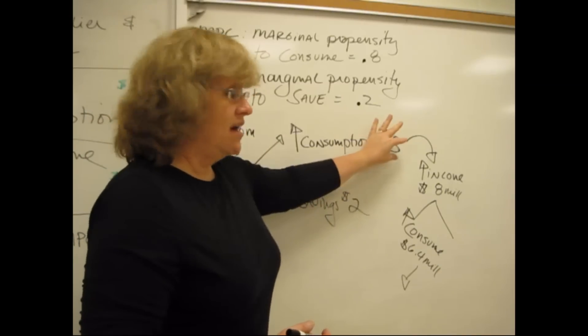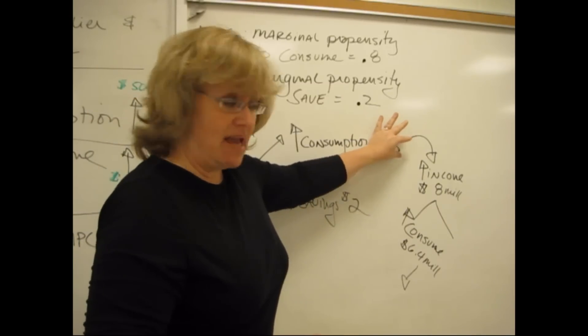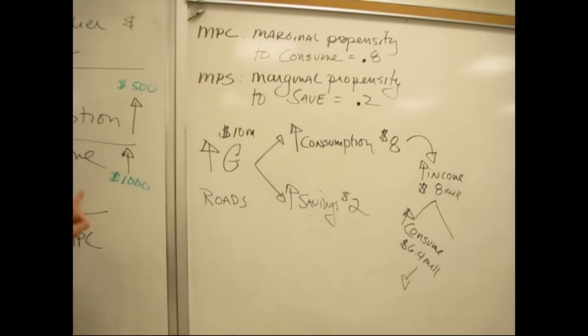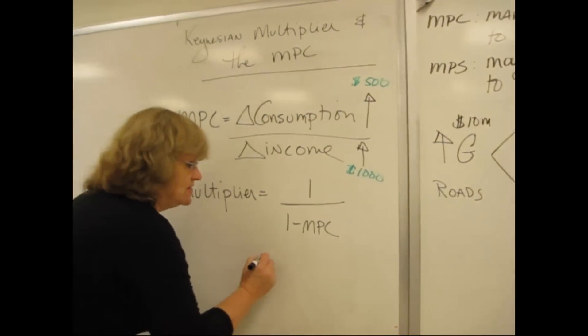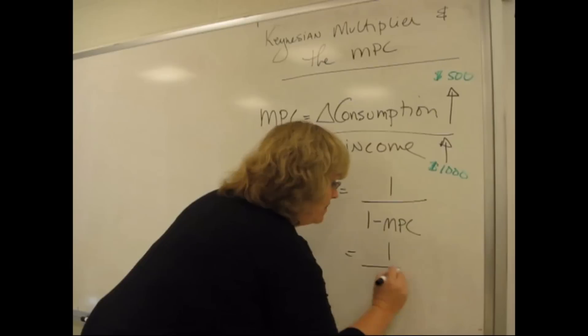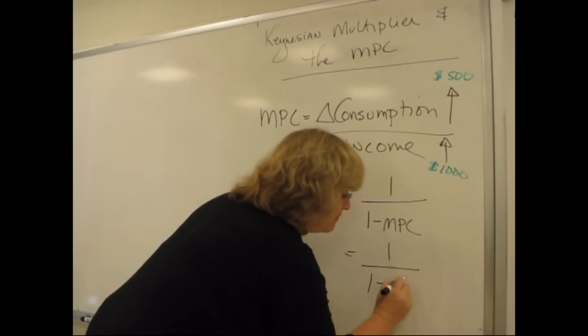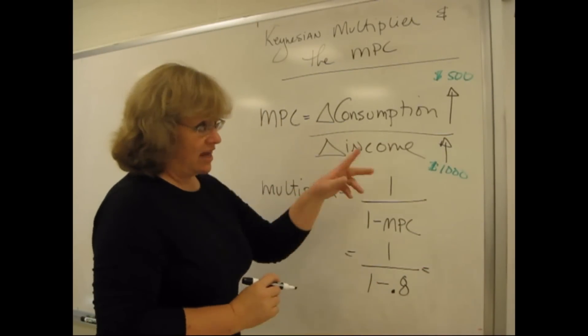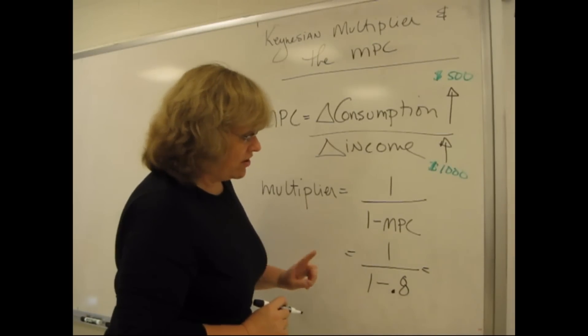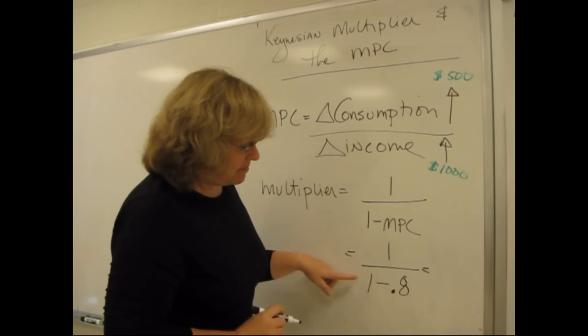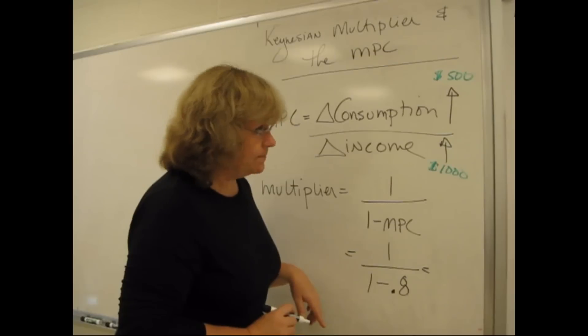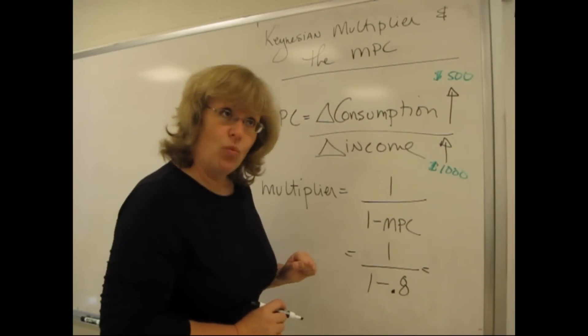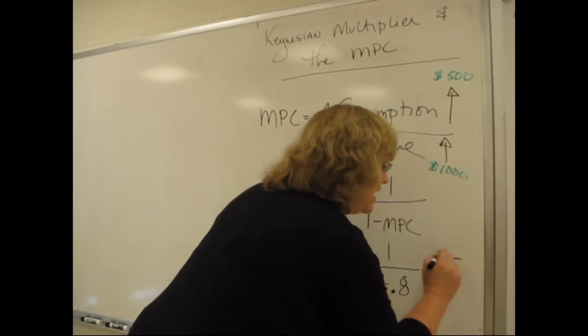The original 10 million dollars, the next stage of spending in the 8 million, the stage after that in the 6.4 million. The multiplier tells us, if we substitute in the numbers that we've been using here, that the final change in spending is going to be equal to the multiplier times that original change. The multiplier in my example here is 1 divided by 1 minus the MPC. That's 0.8. So that's 1 over 0.2, 1 over 2 tenths, which turns out to be 5.